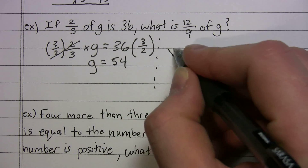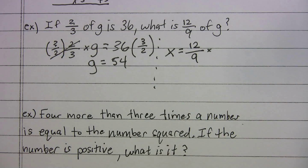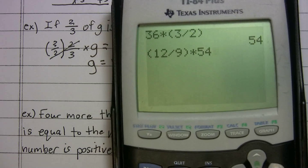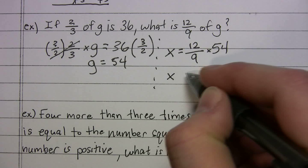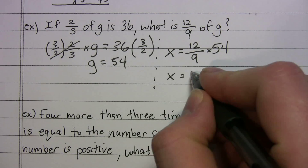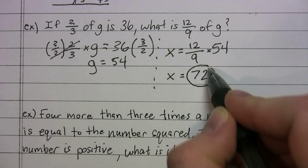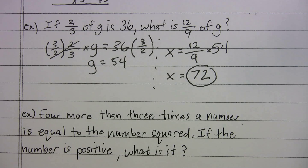Now for the second part: what is 12/9 of G? We set X = (12/9) × 54. Using a calculator: 12 ÷ 9 × 54 = 72. So X equals 72, and that's our final answer — 12/9 of G is 72.